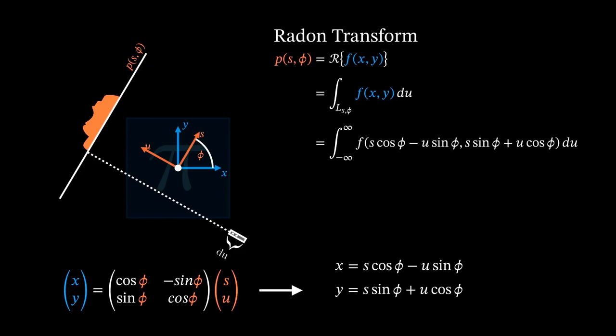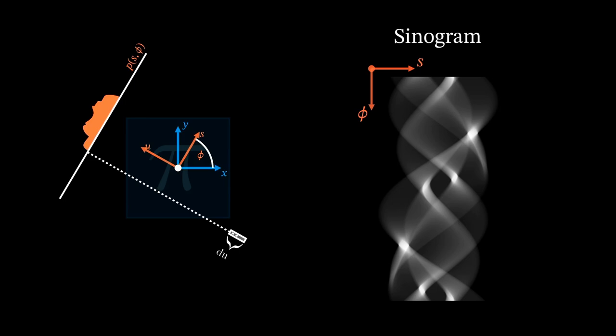Lastly, by solving x and y for the variable s, we can describe s by x, y and phi. This yellow-framed formula is a take-away information from this scene and will be used later. Now, we also have enough knowledge to put a coordinate system onto the sinogram that is s on the horizontal axis and phi on the vertical axis.